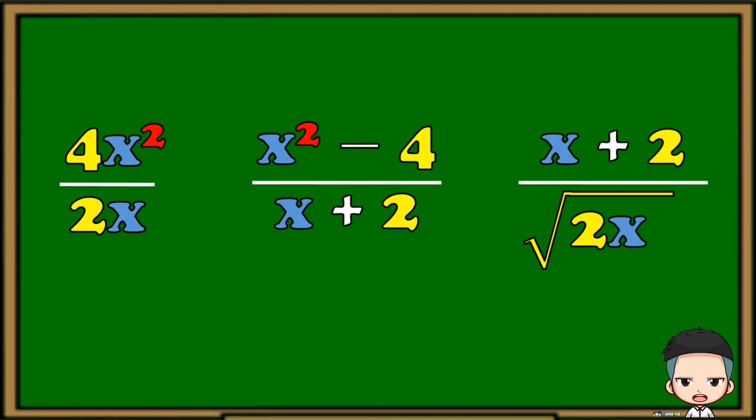As we can see, the third example has a denominator with a radical sign. Since we cannot remove that radical sign or we cannot simplify the denominator, then we can say that the third example is not a rational algebraic expression.